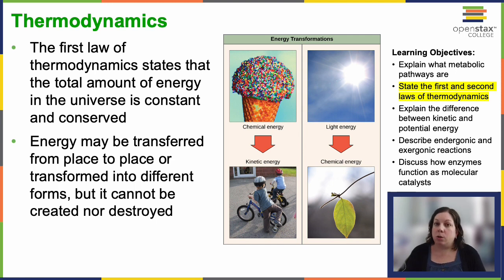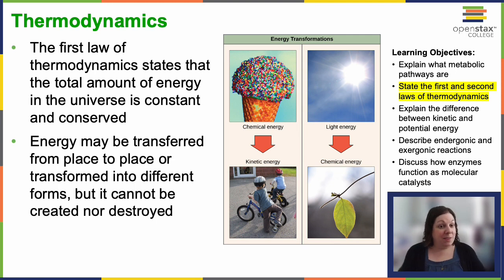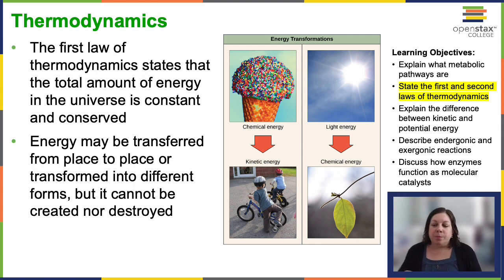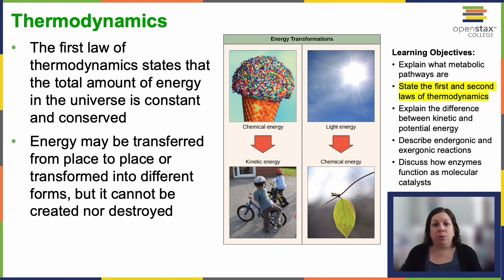Energy transformations are happening all around us all the time — from light bulbs converting electrical energy into light and heat, to plants converting sunlight into chemical energy in the form of glucose. Living cells face the challenge of obtaining energy in usable forms. We can't just step outside into the sun and make glucose; we have to consume something that has done that. Typically, we pull in nutrients and convert them into usable ATP so that we can build new things, power reactions, move our muscles, and so on.